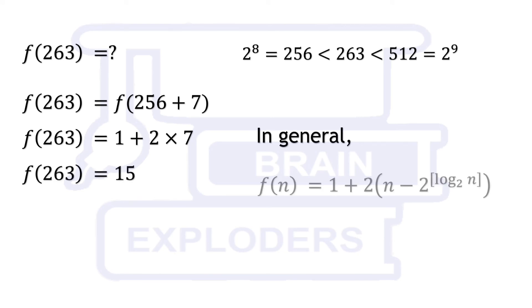In general, we can write f(n) equals 1 plus 2 times (n minus 2 to the power [log n at base 2]), where bracket is greatest integer function or integral part.